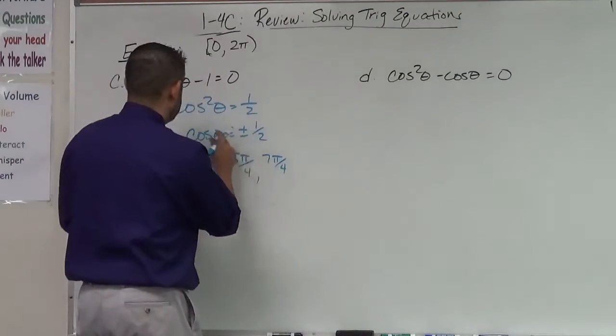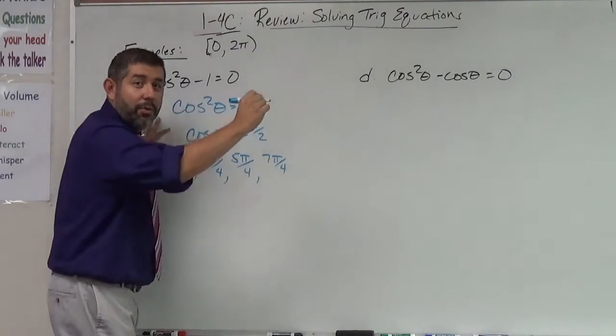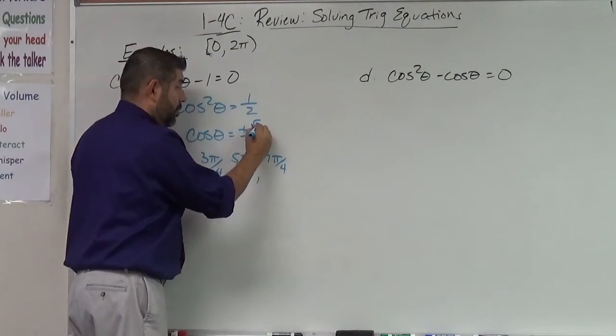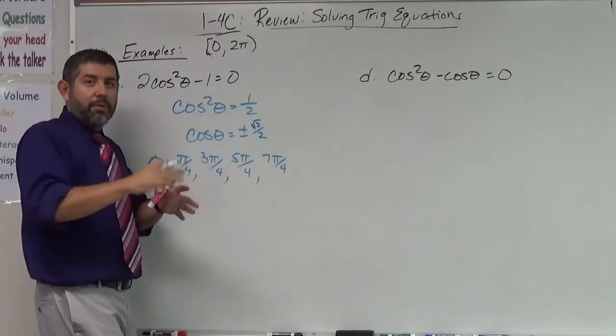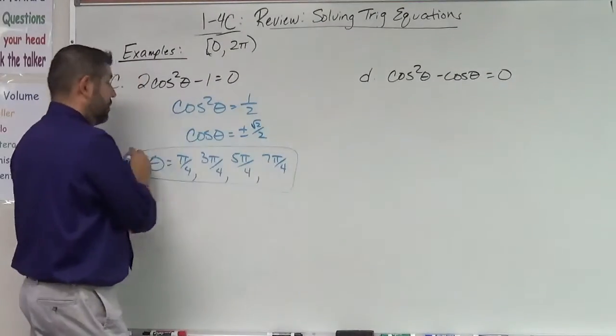I'm sorry. I forgot to take the plus or minus square root. So when I square root that, when I square root one half, that's going to give me square root of two over two. Square root of one half, I'm going to get square root of two over two. That's going to give me these four places, alright?